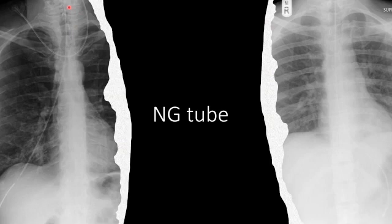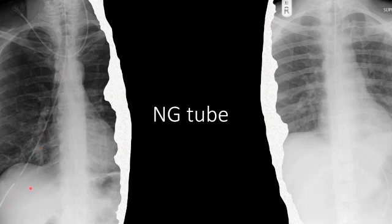This image shows a misplaced enteric tube — specifically a feeding tube. You can tell it's a feeding tube and not a suction tube because the tip is markedly radiopaque; that's a weighted tip feeding tube. This tube actually headed down through the right main bronchus into the right lower lobe. If you look at an appropriately placed tube, it goes down the midline and never follows the course of any bronchi.